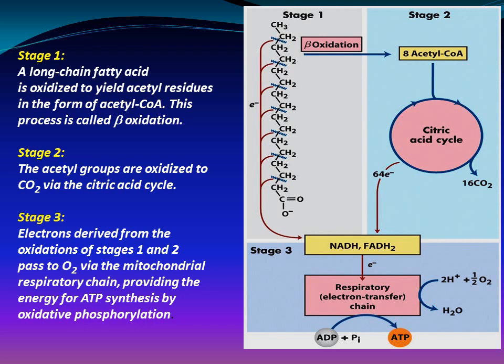ATP production via fatty acid oxidation takes place in three stages. Stage 1: a long-chain fatty acid is oxidized to yield acetyl residues in the form of acetyl-CoA — this process is called beta oxidation. In stage 2, the acetyl groups are oxidized to carbon dioxide via the citric acid cycle. During stage 3, electrons derived from the oxidations of stages 1 and 2 pass to oxygen via the mitochondrial respiratory chain, providing the energy for ATP synthesis by oxidative phosphorylation.